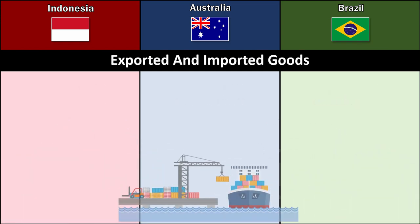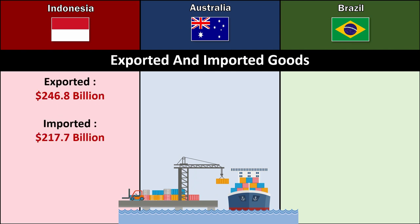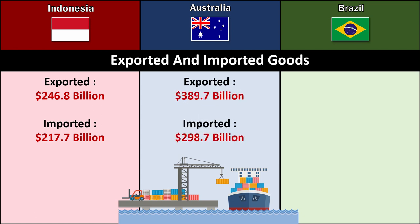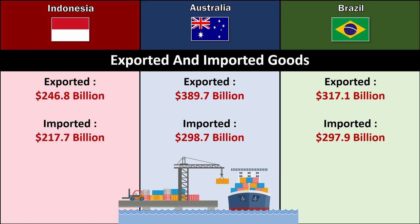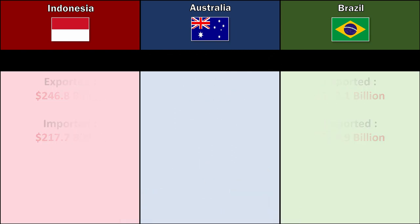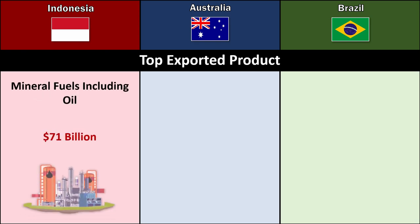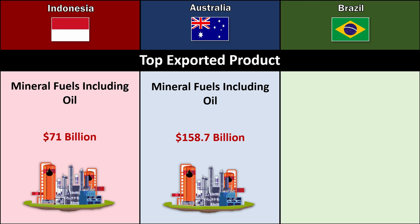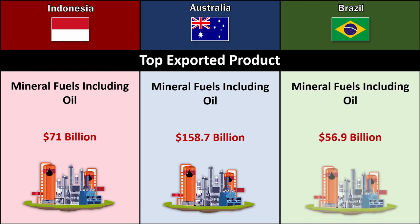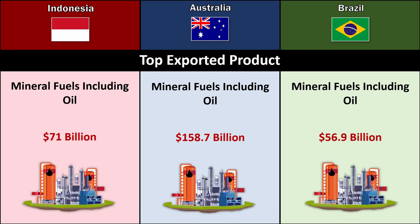Exported and imported goods: Indonesia — Exported $246.8 billion, Imported $217.7 billion. Australia — Exported $389.7 billion, Imported $298.7 billion. Brazil — Exported $317.1 billion, Imported $297.9 billion. Top Exported Product for all three: Mineral Fuels Including Oil — Indonesia $71 billion, Australia $158.7 billion, Brazil $56.9 billion.